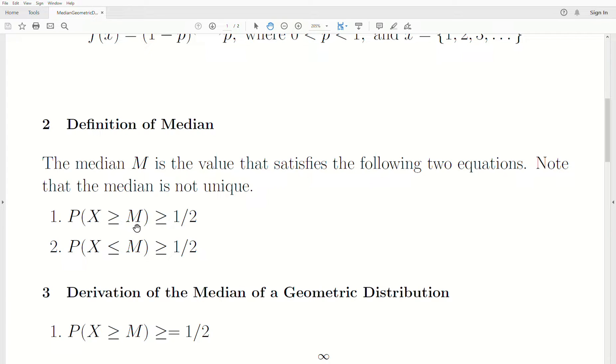But the M that satisfies both of these equations, any M is a median. So the probability that X is greater than or equal to M is greater than or equal to one-half, and the probability that X is less than or equal to M is greater than or equal to one-half. That value M is the median.